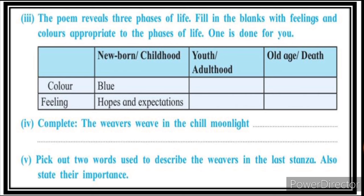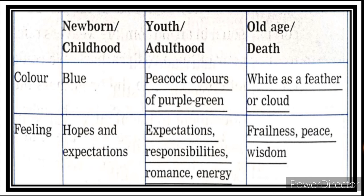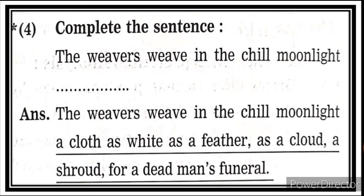Filling in the blanks for phases of life: Color blue, newborn/childhood — feeling: hopes and expectations. Youth/adulthood — colors: purple and green. Old age/death — white as a feather or shroud — feeling: hopes and expectations, responsibilities, romance, energy, frailness, peace, wisdom. The weavers weave in the chill moonlight a cloth as white as a feather, as a cloud — a shroud for a dead man's funeral.